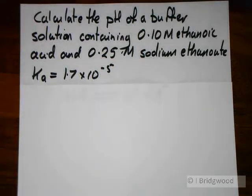Buffer calculation number one. Calculate the pH of a buffer solution containing 0.1 molar ethanoic acid and 0.025 mole per cubic decimetre sodium ethanoate. Ka value equals 1.7 times 10 to the minus 5.